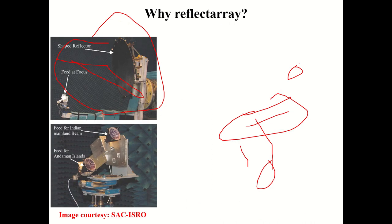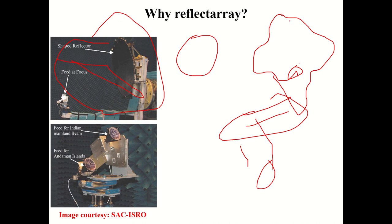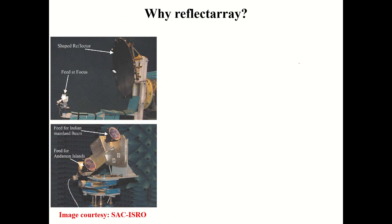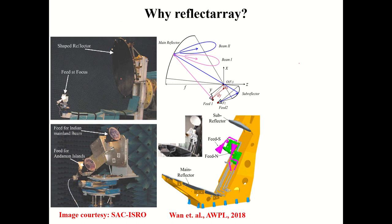The second advantage is shaped beam. For example, if you want India coverage, a conventional antenna produces a circular beam that cannot match an irregular boundary. To cover only India and avoid nearby countries receiving the signal, a shaped beam is needed. In a parabolic reflector, this requires physically shaping the reflector to achieve the desired phase correction for the shaped beam.